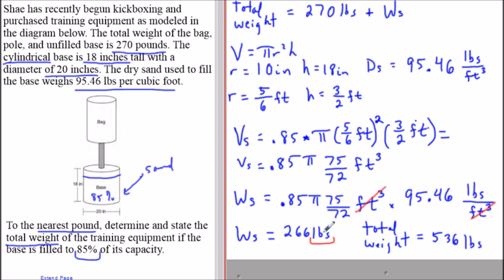To calculate the total weight, make sure you're adding 266 plus 270, which is the weight of the unfilled exercise equipment. The final answer is 536 pounds.